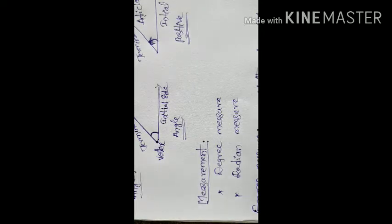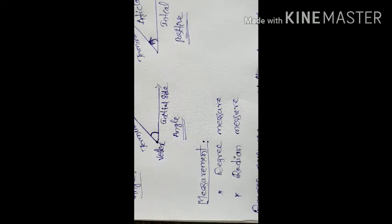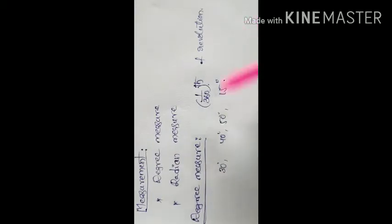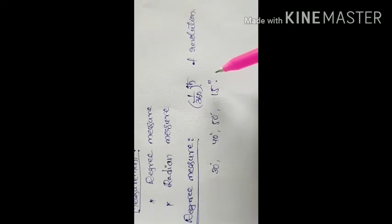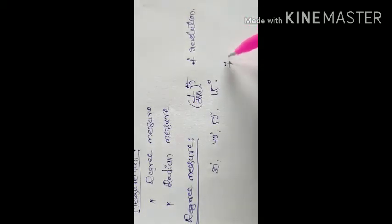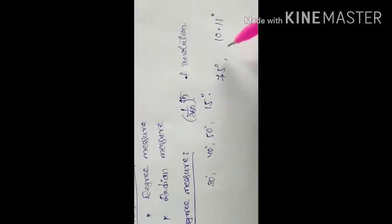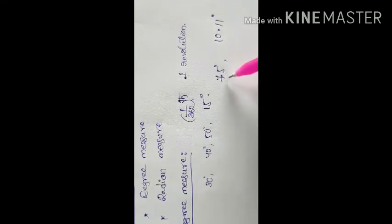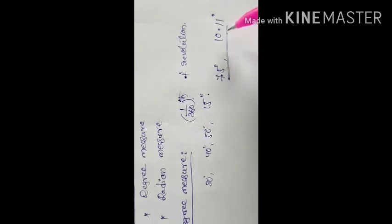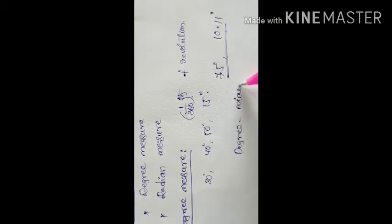We can express the measures in decimals, such as 7.5 degrees or 10.11 degrees. For this representation, you need to use the degree, minute, and second system.